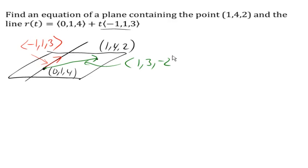And now we can go ahead and find our normal vector by crossing (-1, 1, 3) with the vector (1, 3, -2). And that's going to give us this cross, this normal vector here.